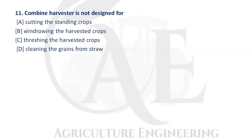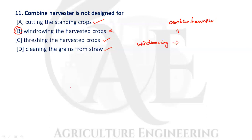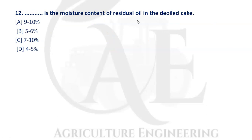Next question: a combined harvester is not designed for what? The combined harvester is used for cutting standing crops, threshing harvested crops, and cleaning grains and straw. It cannot withdraw harvested crops, so option B is the correct answer.